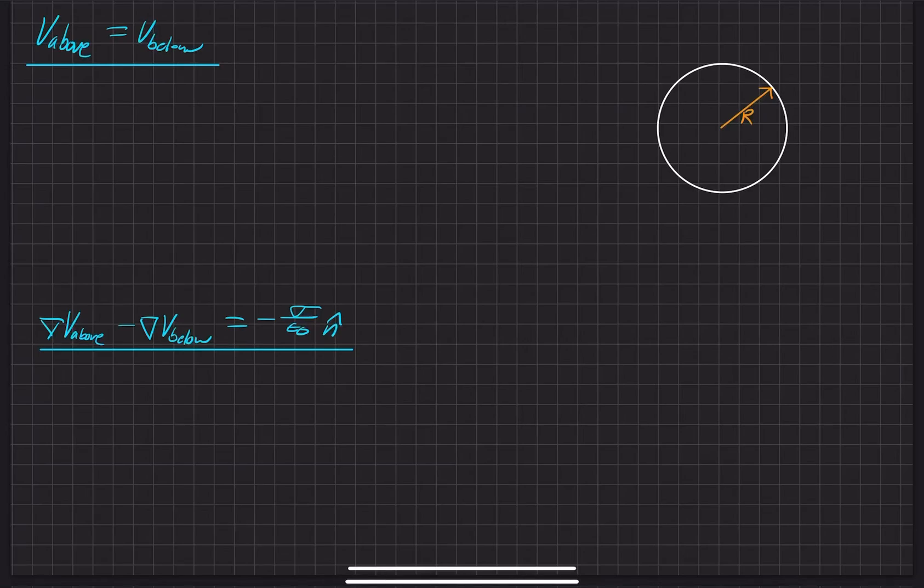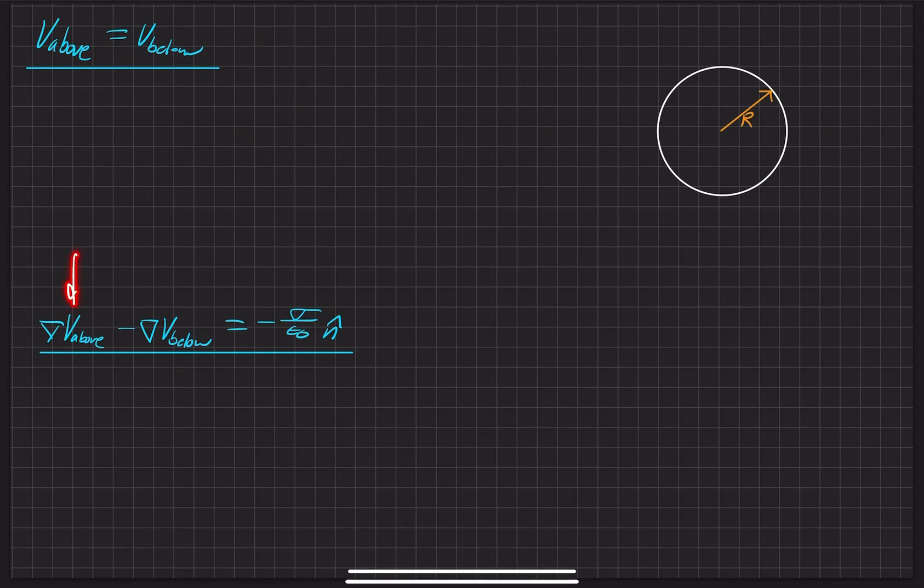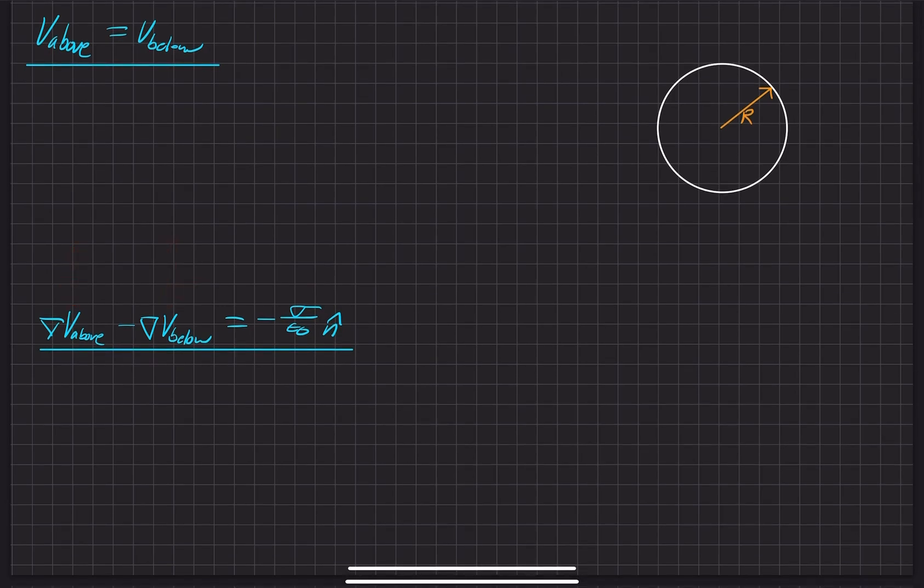In this part of the problem, we are trying to verify these two conditions right here. So the first one is showing that the potential, the electric potential, is continuous across a boundary. And then also on the second one down here is to show that the gradient, or the change, in the electric field is equal to this condition right here, which, as you'll know, this is actually the electric field here.